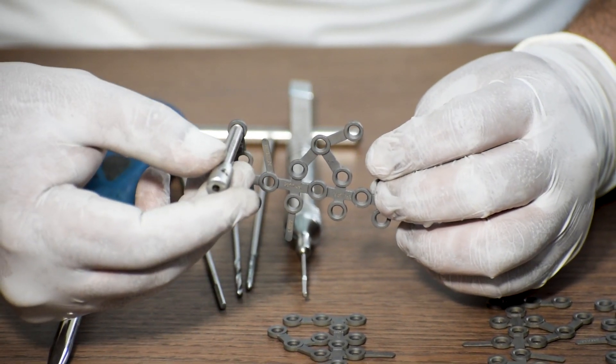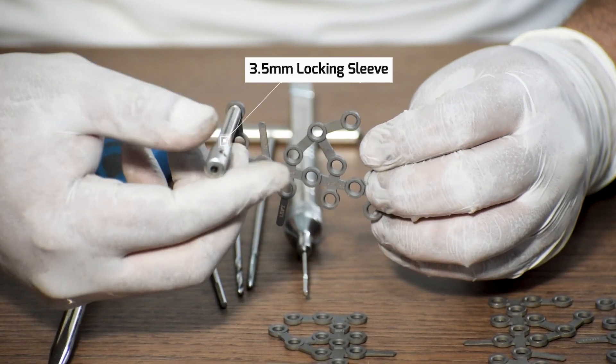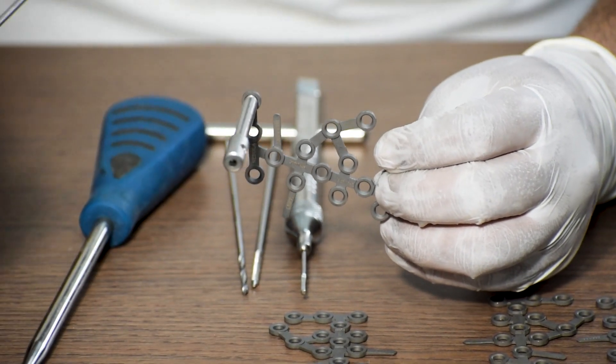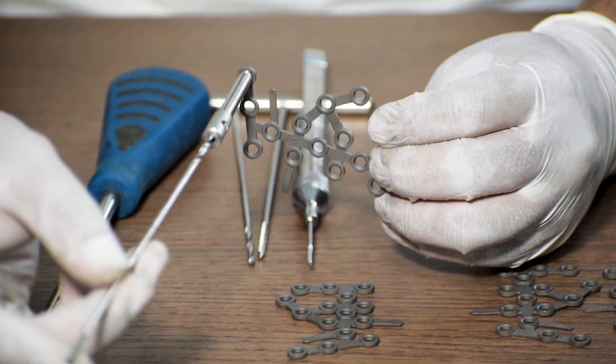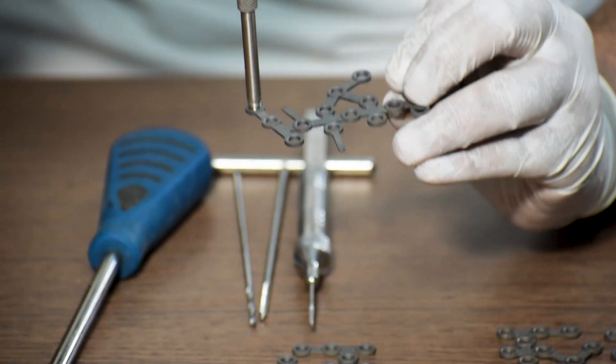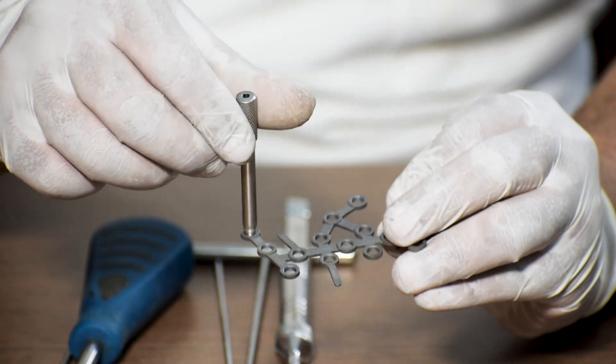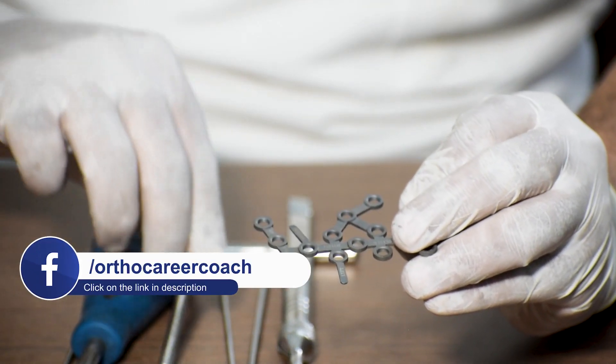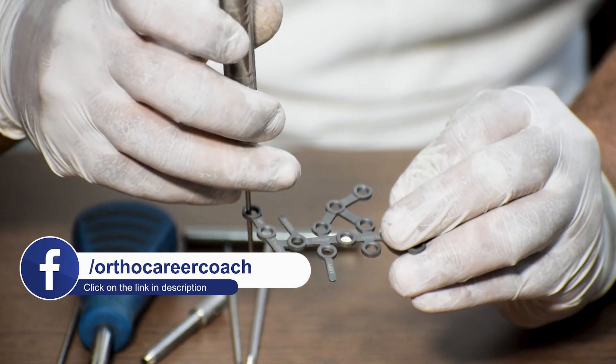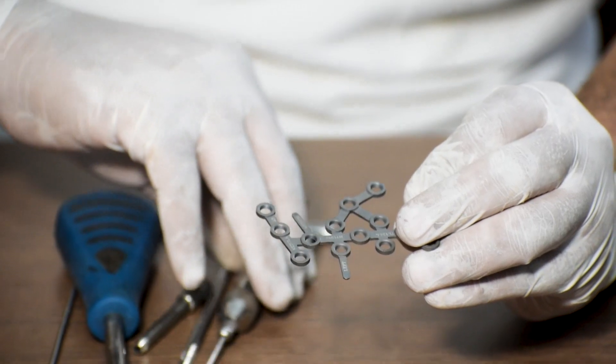In order to fix a 3.5 mm locking screw, first we will attach the 3.5 mm locking sleeve in the plate. Then we take a 2.8 mm drill bit and drill through the locking sleeve. After the drilling is done, we remove the locking sleeve and use the depth gauge to measure the length of the screw that is needed to be provided and fixed in this plate.